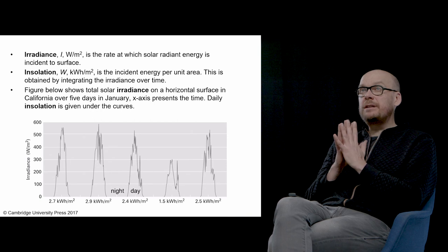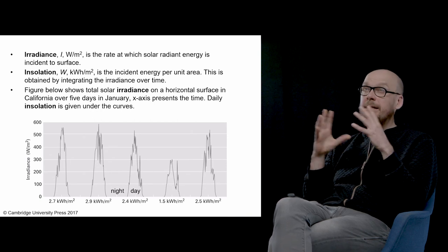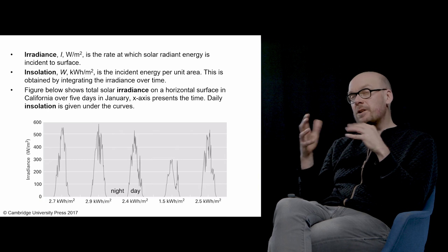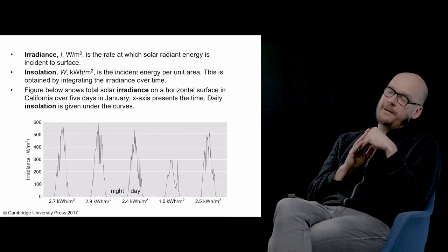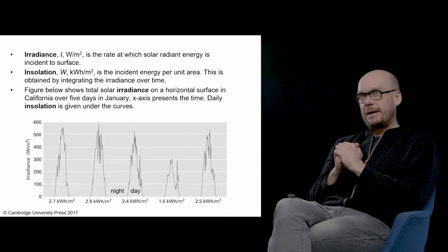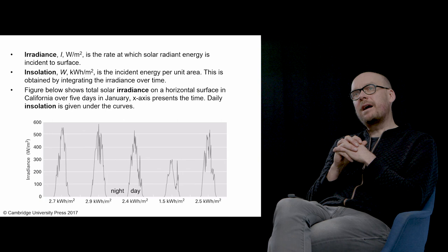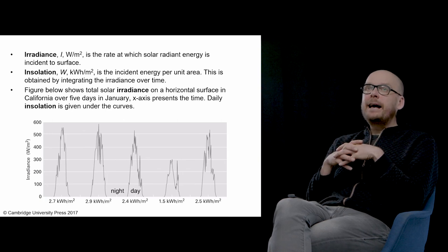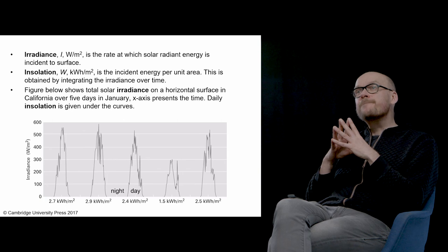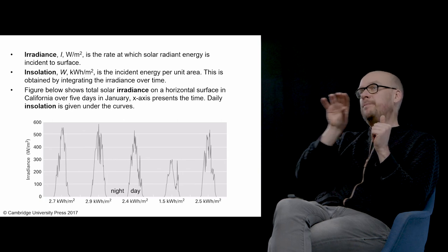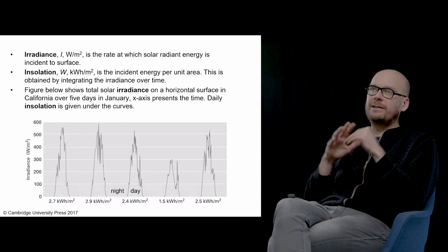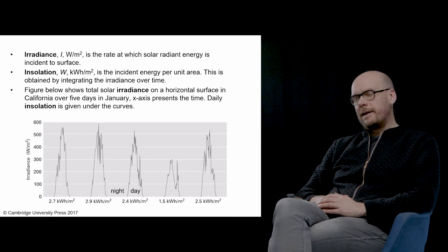Then few terms: irradiation, that's watts per square meter, tells us the rate at which solar radiant energy is incident to the surface. Then we have insolation, that's the cumulative amount of solar irradiation, the integral of irradiance over time. Here is an example from California showing five different days. The maximum irradiance is around 550 watts per square meter. Even in California, a very sunny location, there can be significant variations between different days.